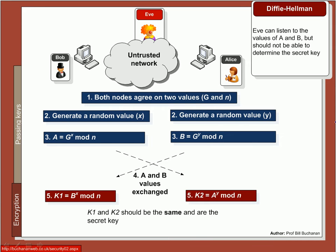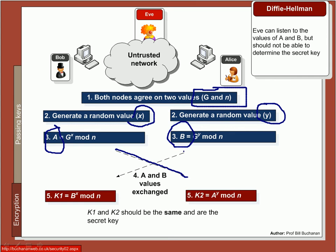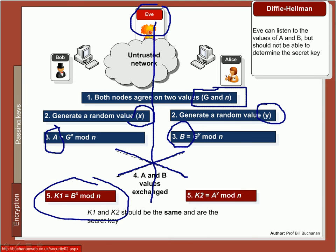With the Diffie-Hellman method, the mathematics behind it is that Bob and Alice agree on values g and n. Bob generates a random number and Alice generates another random number. Then Bob does a simple calculation to generate a value A, and Alice does the same to generate B. Bob sends A and Alice sends B. Even though Eve is listening to A and B, it is extremely difficult for her to find out the derived keys. When they do the calculations, key 1 and key 2 should be the same.